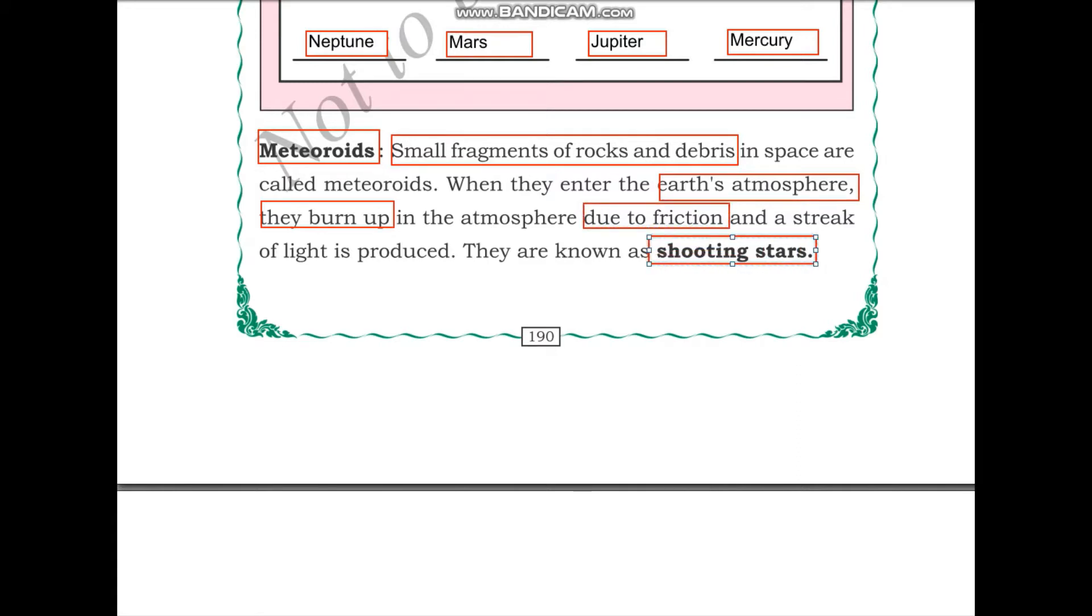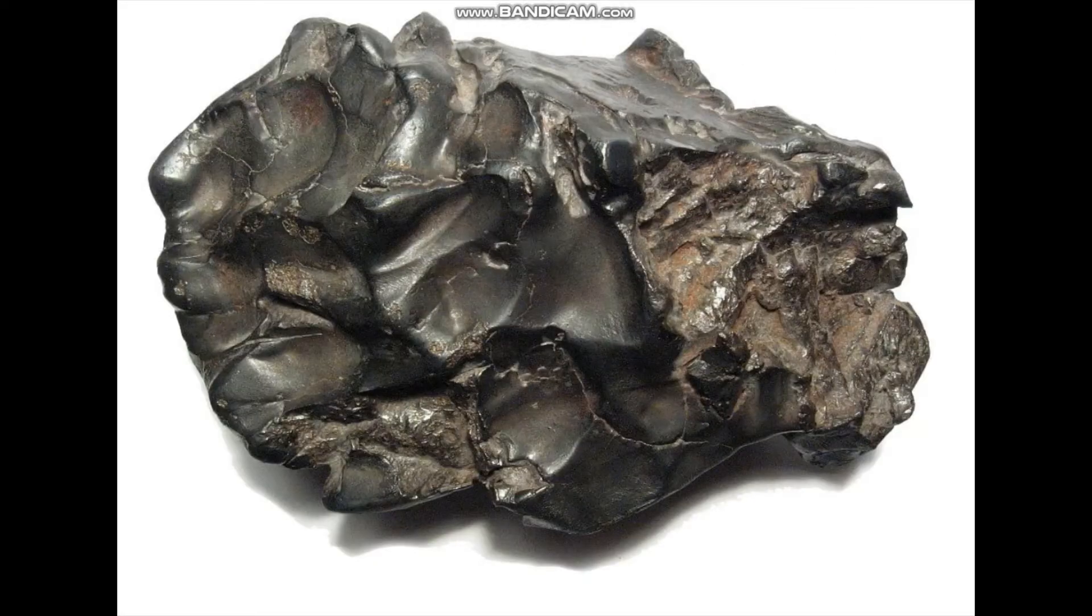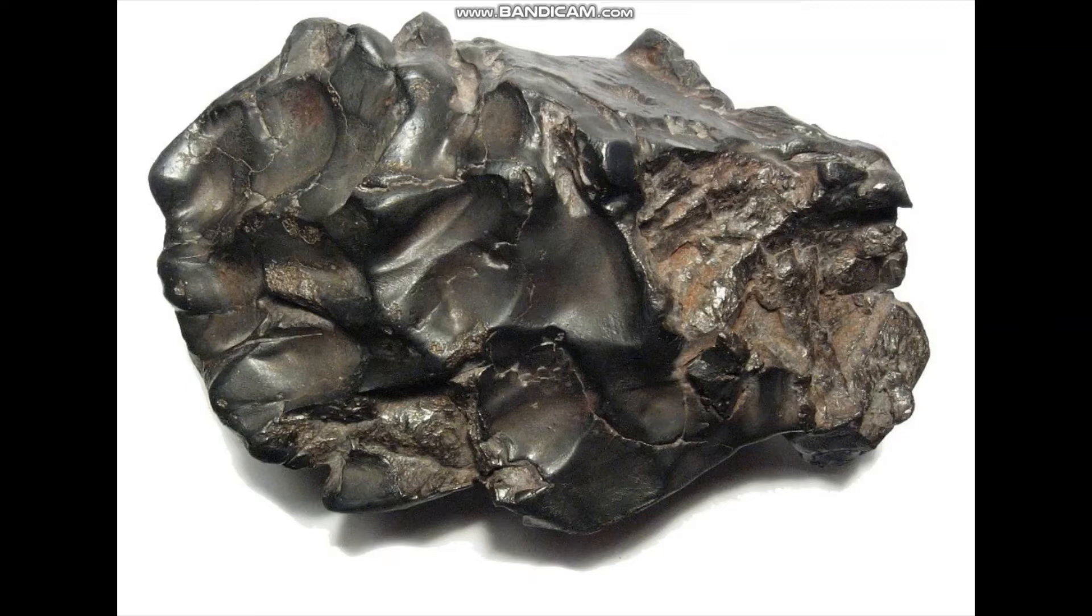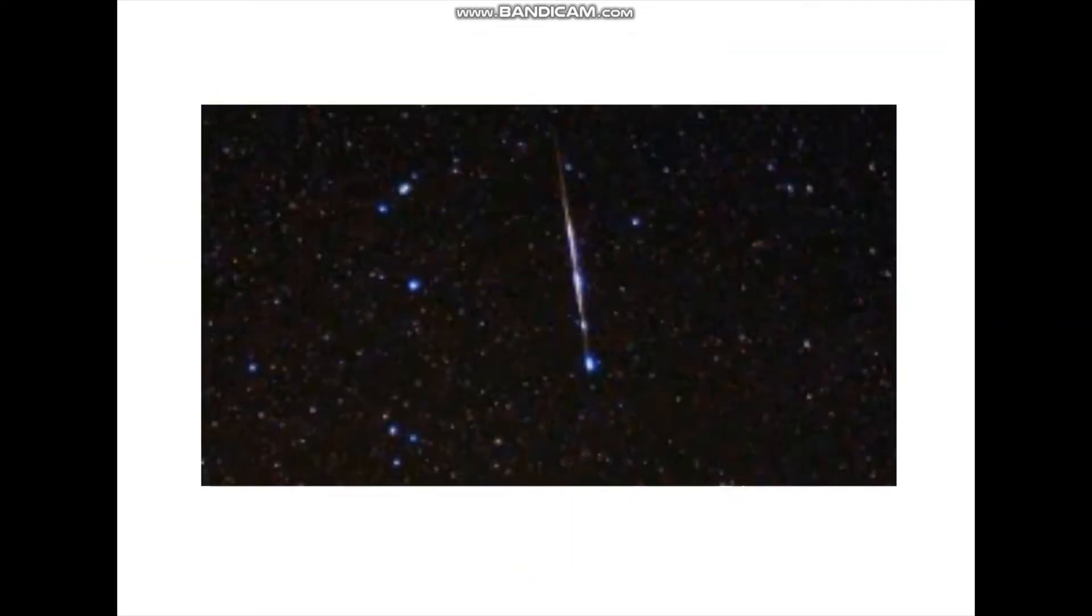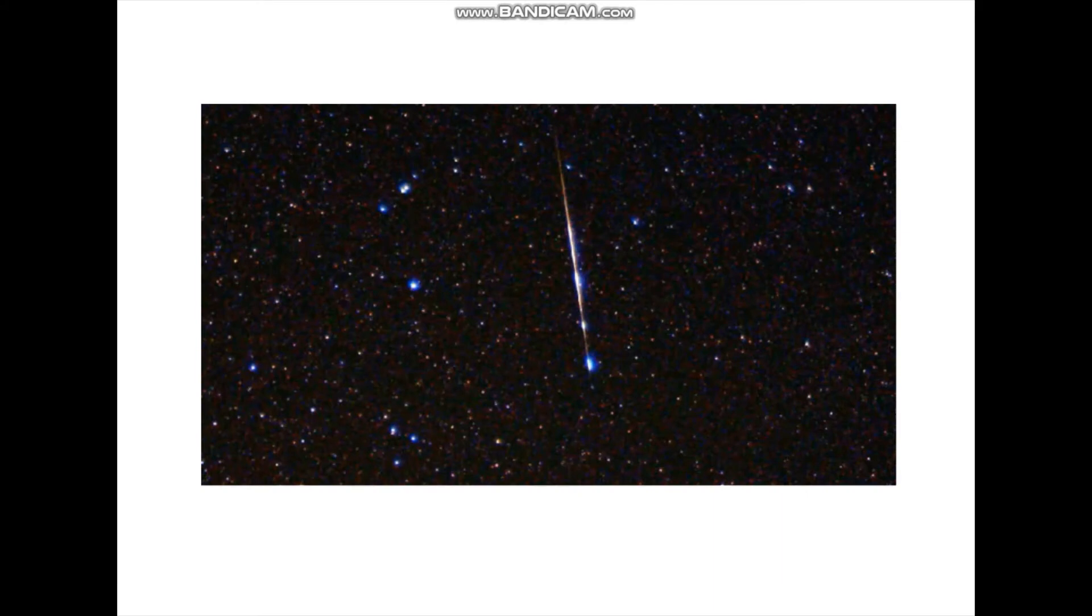Let me show you an image of the meteor. This is a real meteor that has been collected. This is a space rock. And when they fall into the Earth's atmosphere, they look something like this one. You can see a streak of light is being produced. This is because the meteorite has come in contact with the atmosphere and is burning up.